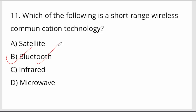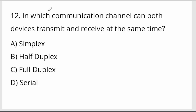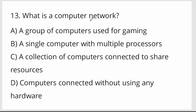Which of the following is a short-range wireless communication technology? That is Bluetooth — short-range wireless communication technology. In which communication channel can both devices transmit and receive at the same time? That is full duplex — for example, a voice call or video call.